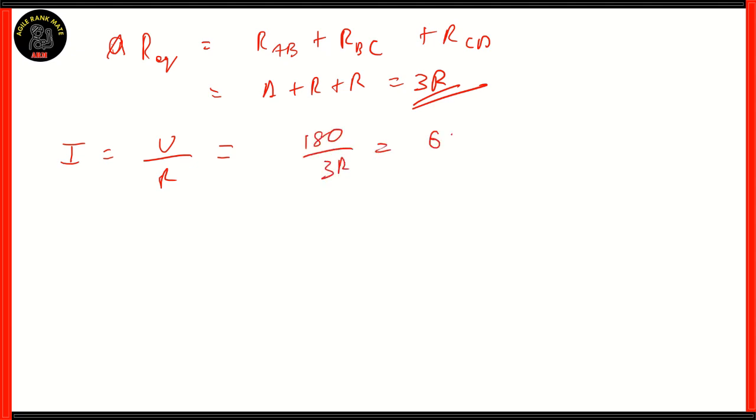Now, the total resistance would be resistance of AB plus resistance of BC plus resistance of CD, which would be R plus R plus R, and that would be 3R. Now we need to find the current, which would be V/R, which in this case is 180/3R, which means it would be 60/R.